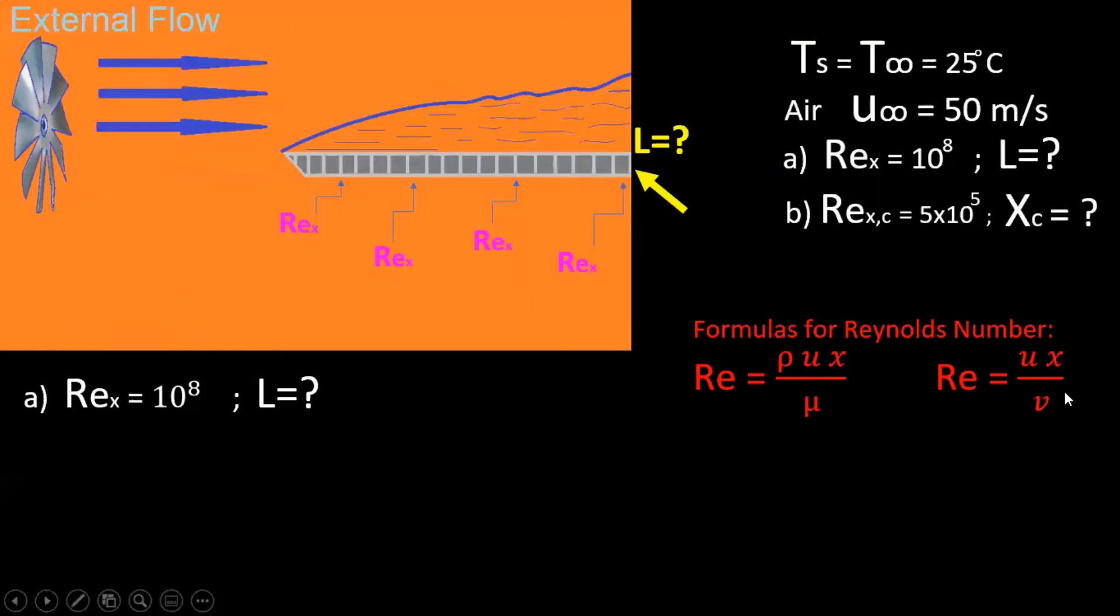Since for the second one we only need to find the property for our fluid, our kinematic viscosity. For the first formula you would have to find density and dynamic viscosity, so two properties to look up in a table.